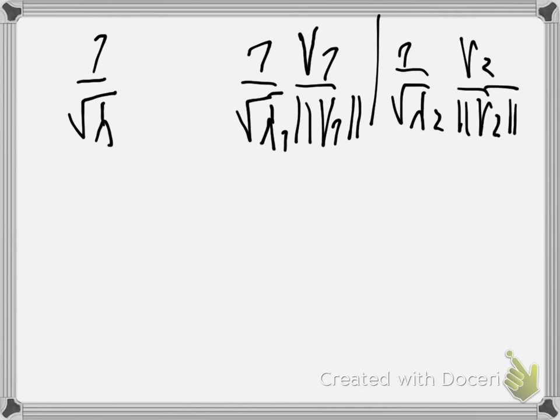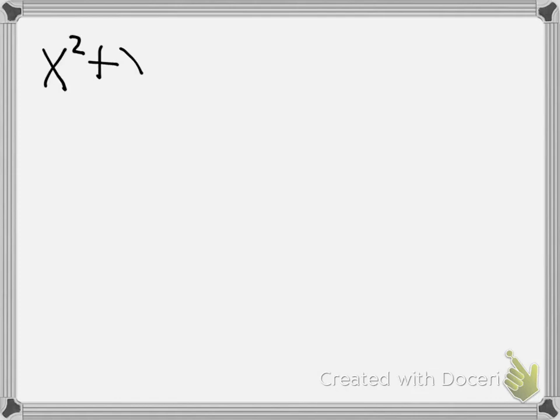You can use matrices to represent hyperbolas or ellipses. Let's do one example. We have the following equation, which is the equation for an ellipse. Now we want to find the axis of the ellipse.